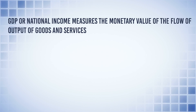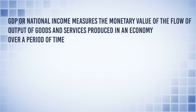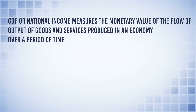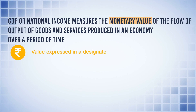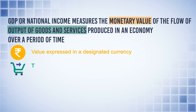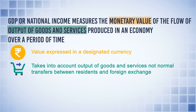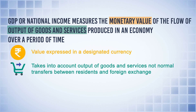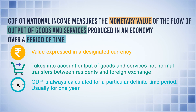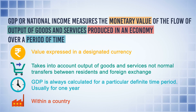GDP or National Income measures the monetary value of the flow of output of goods and services produced in an economy over a time period. Breaking down the definition: it is monetary value, that is, value expressed in a designated currency. It only takes into account output of goods and services, but not normal transfers between residents or inflow of foreign exchange for personal consumption. GDP is always calculated for a particular definite time period — usually one year.